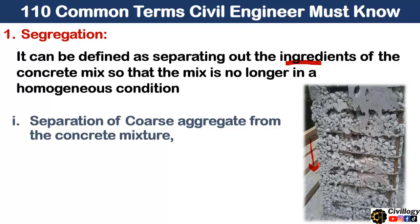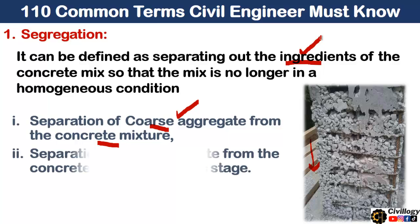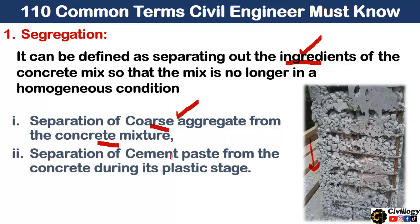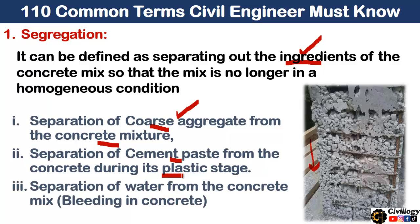Segregation can be of two or three types. The first is the separation of coarse aggregate from the concrete mixture. The second type is the separation of cement paste from the concrete during the plastic stage. The third type is the separation of water from the concrete mix, which is called bleeding in concrete.